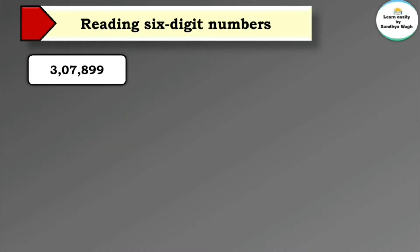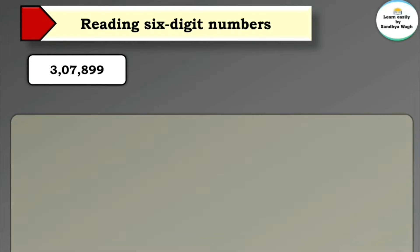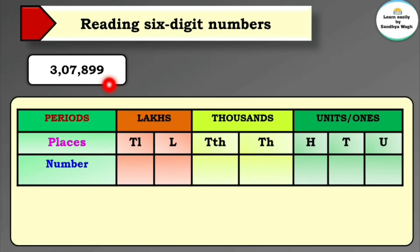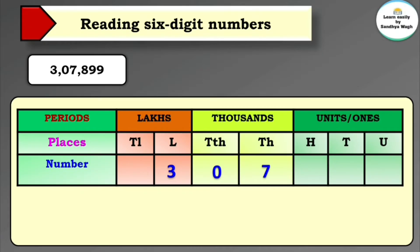Now let's read this number: 3,07,899. Nine is in the units place, again nine is in the tens place, eight is in the hundreds place, seven is in the thousands place, zero is in the ten thousands place, and three is in the lakhs place. So: three is in the lakhs place, zero in ten thousands, seven in thousands, eight in hundreds, nine in tens, and nine in units. Read this number: three lakh seven thousand eight hundred and ninety-nine.